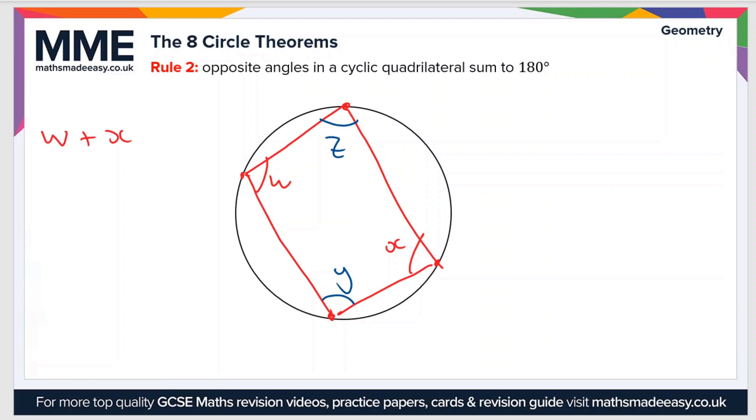Well, the sum of the two opposite angles is 180 degrees, so w plus x equals 180 degrees, and y plus z equals 180 degrees. And then if you add these two together, you get 180 plus 180 is 360 degrees, which is obviously the sum of the internal angles of any quadrilateral.